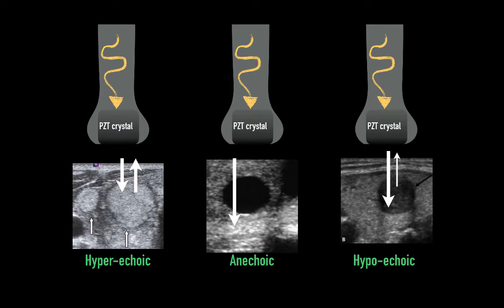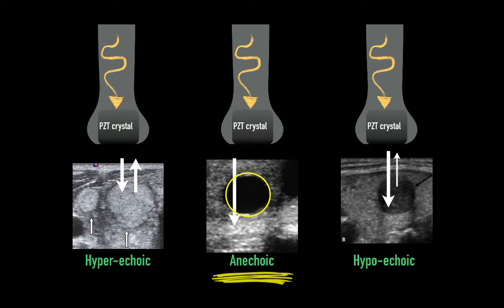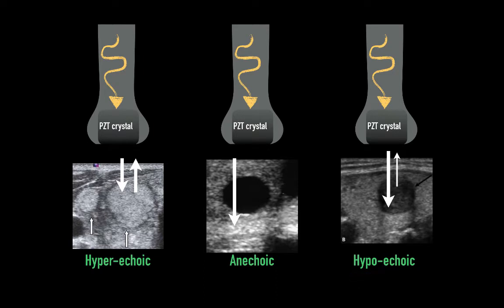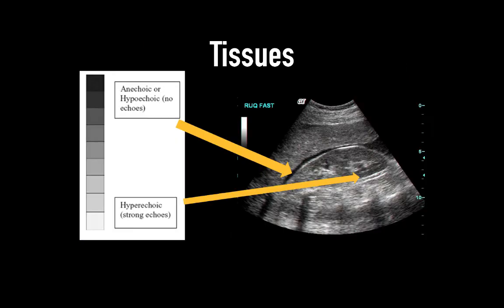Sound waves that return with high amplitudes will reflect brightly — seen here as a hyperechoic structure. When sound waves propagate through a medium without any reflection, the screen pixel will be black and the structure is said to be anechoic, or echo-free. The machine interprets this as a dark region where no echo returns. Waves that lose energy after interacting with tissue return low amplitude, translated into shades of gray, or hypoechoic. Note that hypo- and hyperechoic are relational terms — they refer to surrounding structures. Based on this echogenicity, the full spectrum depends on the tissue texture seen in your image.